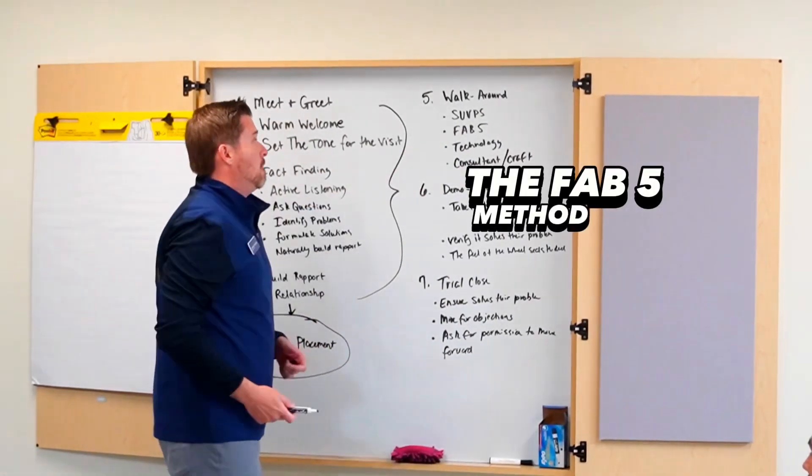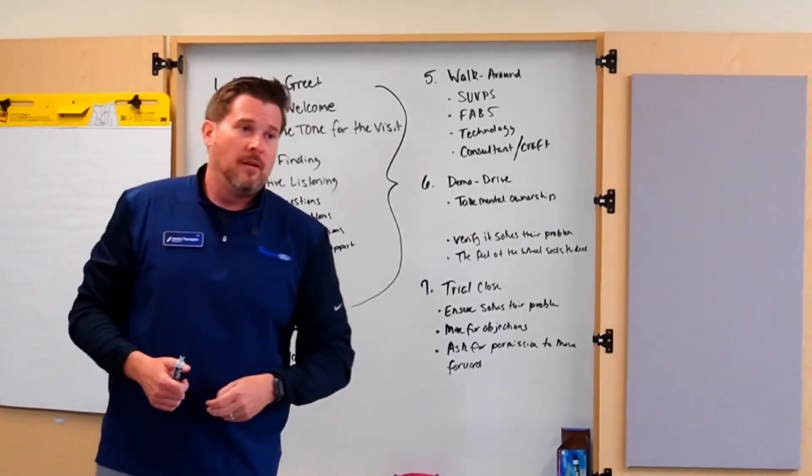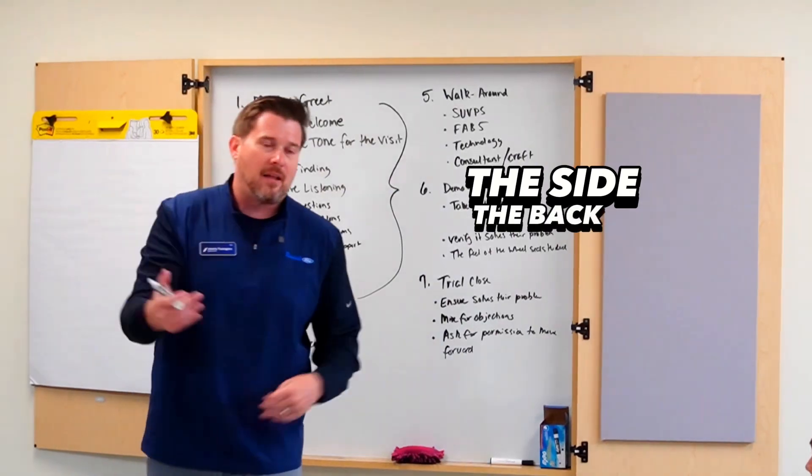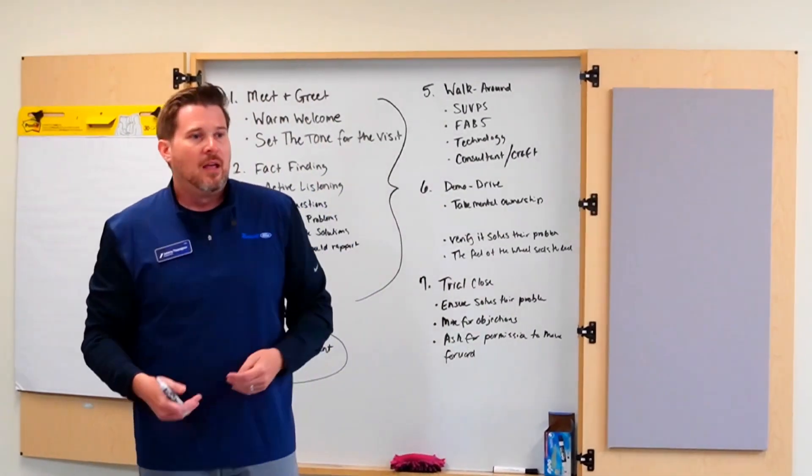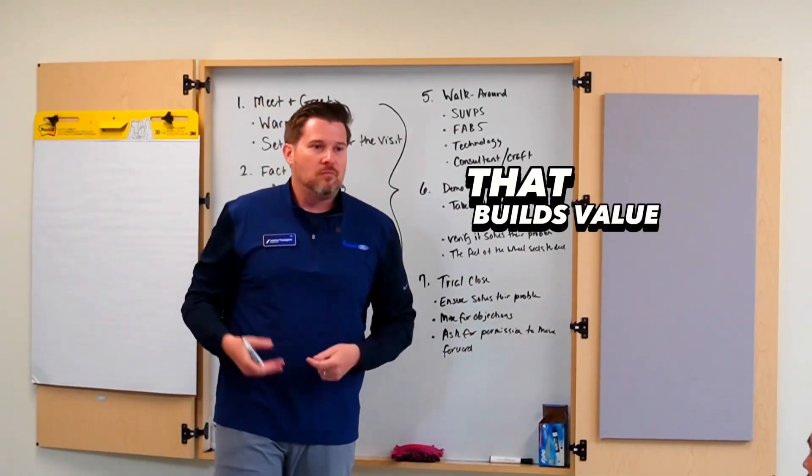The Fab Five method, which is features and benefits in five zones. That allows you to go around all five zones of the vehicle, the front, the side, the back, the other side, and the interior, and be able to give a feature and benefit in each of those zones that builds value to your client.